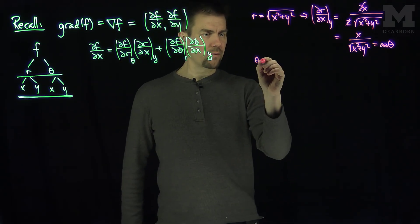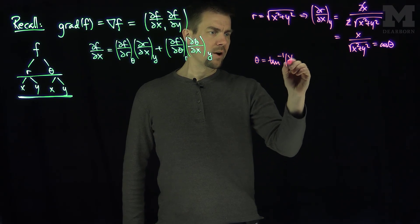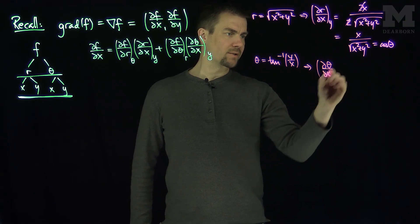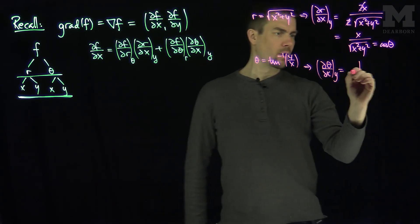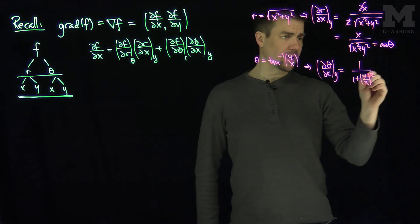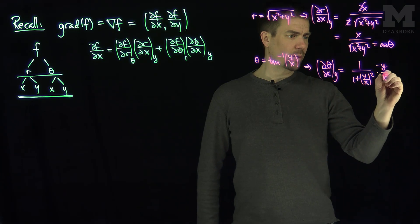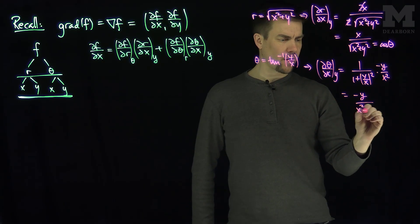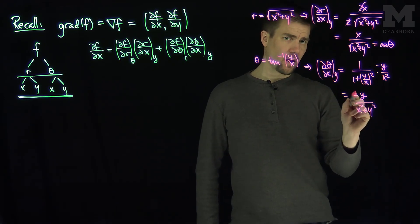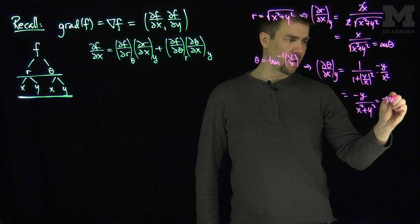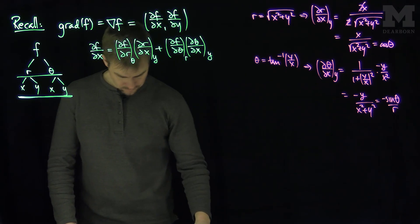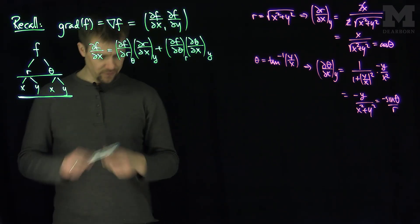Since θ = arctan(y/x), taking ∂θ/∂x treating y as constant gives (1 / (1 + (y/x)²)) · (−y/x²) = −y / (x² + y²). Since y = r sin θ and x² + y² = r², this equals −sin θ / r. So ∂θ/∂x (with y constant) = −sin θ / r.